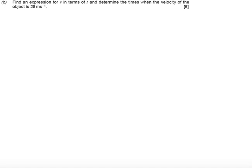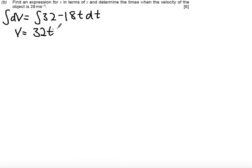Let's look at part b. Part b says find an expression for v in terms of t and determine the times when the velocity of the object is 28 meters a second. What I know is that v is going to be the integral of 32 minus 18t dt. So if we treat it properly using the differential equation, we get a case of separating the variables. The result is exactly the same. So integrating, what we get is that v equals 32t minus t squared 18 divided by 2 gives me 9 plus some constant c.